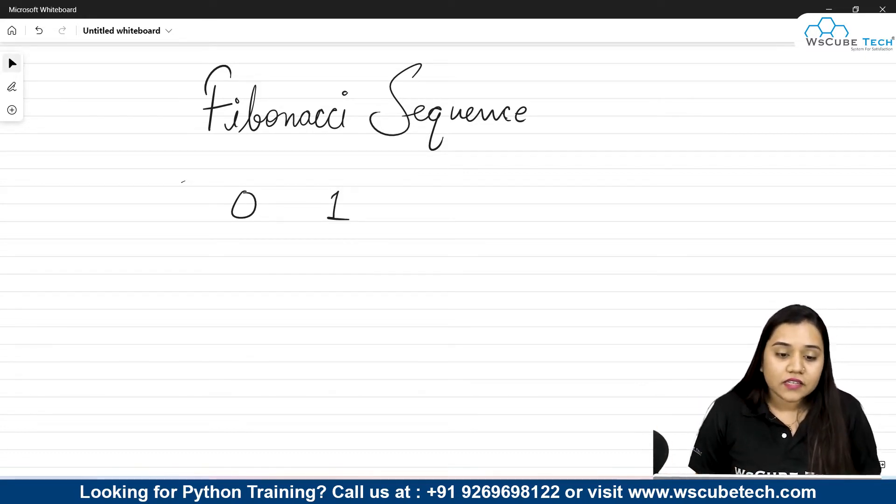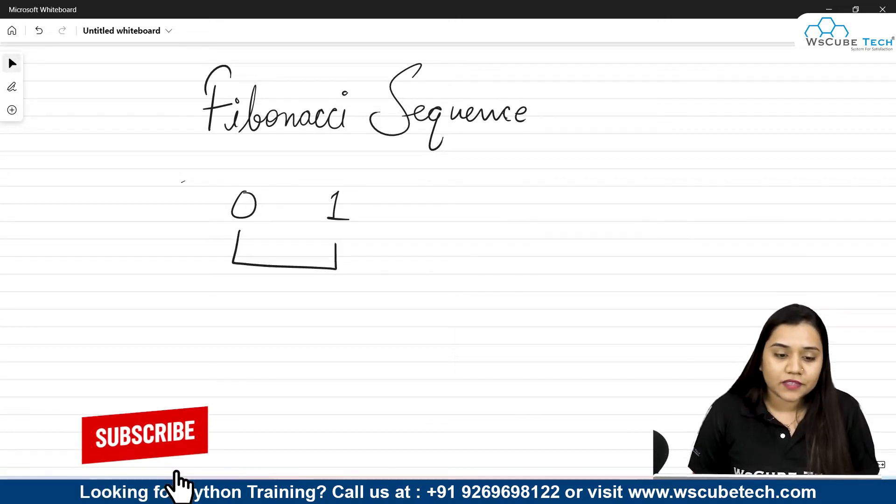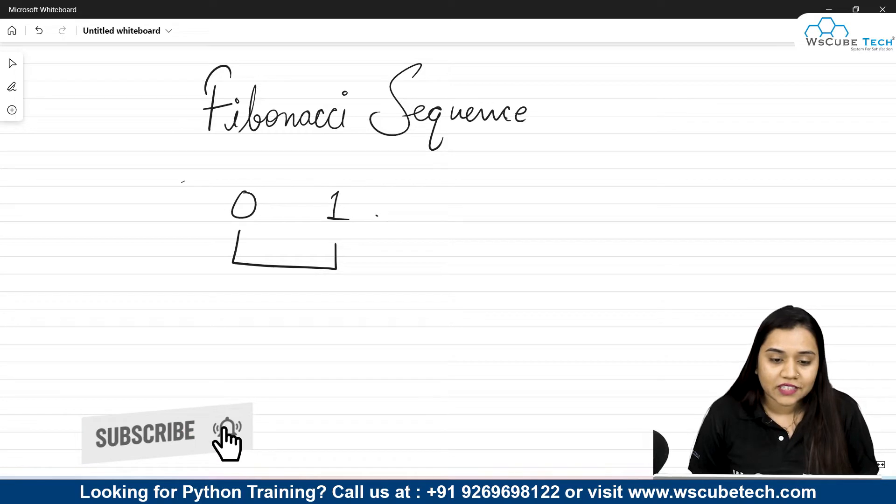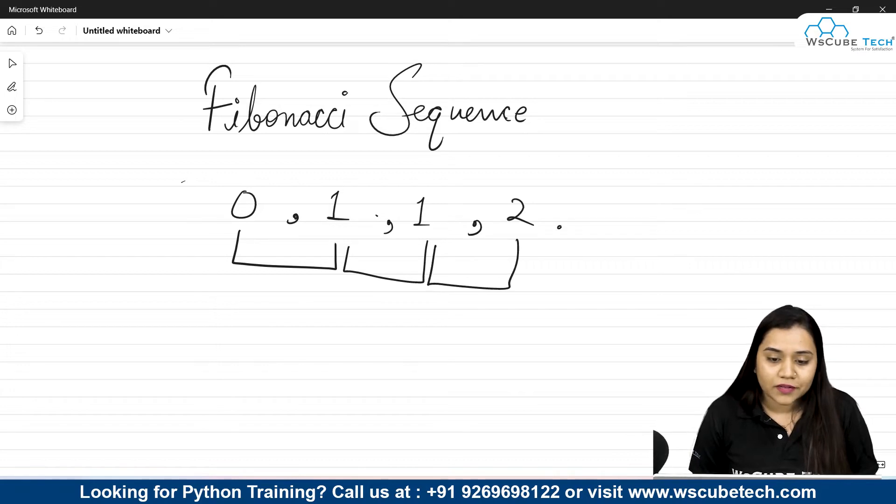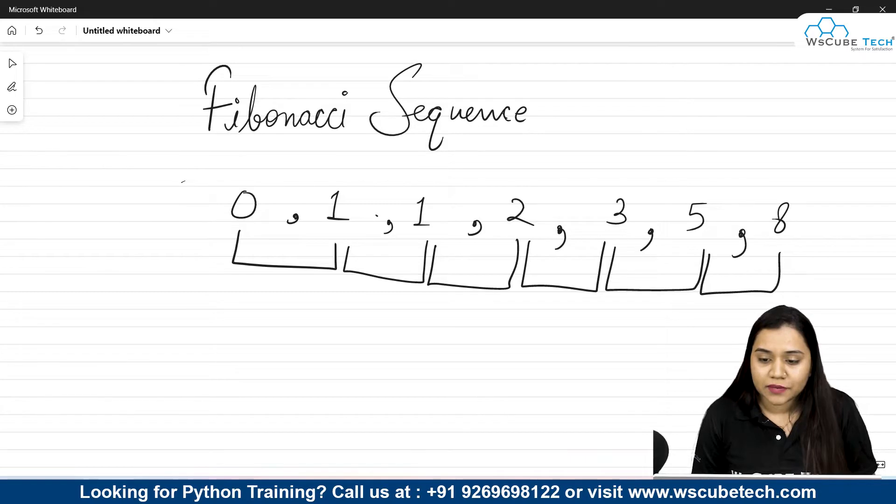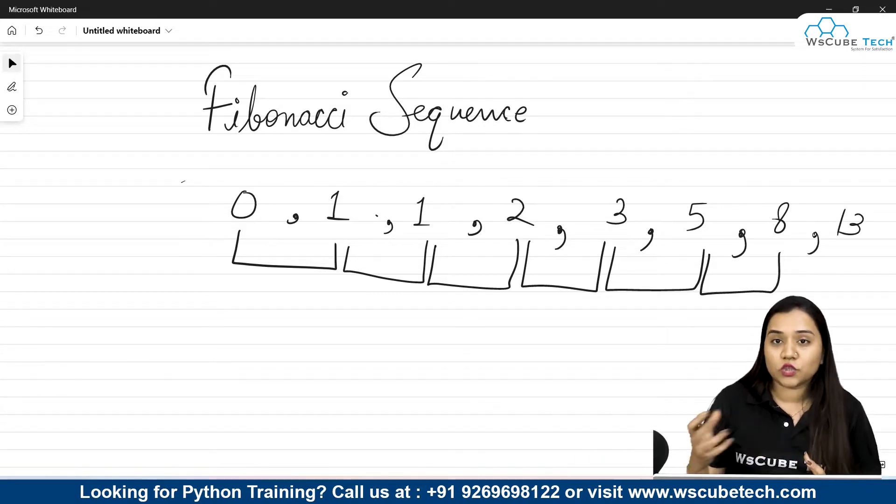How these numbers work is that the sum of preceding two numbers will be our third number. That means 0 plus 1 is our next number, that is 1. Now 1 plus 1 is our next number that is 2, plus 1 will be our next number that is 3. 2 plus 3 will be 5, 5 plus 3 will be 8, and 5 plus 8 will be 13. This is how the sequence works.